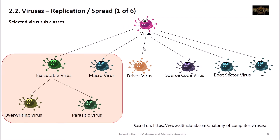Here we have selected virus subclasses. On top we have the virus itself, divisible into subclasses. We have the executable virus, which puts itself into an executable, with two subclasses: the overwriting virus that completely overrides the executable, and the parasitic virus that puts itself into the executable. We also have the macro virus. Additionally, there are driver viruses that hide in drivers, source code viruses that put themselves into source code, boot sector viruses that copy into the boot sector of your hard drive, and many more.